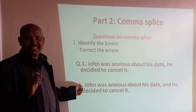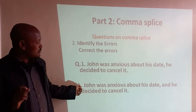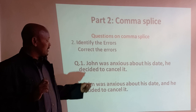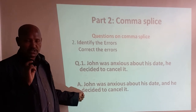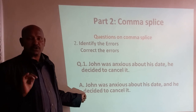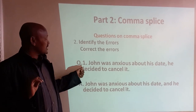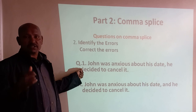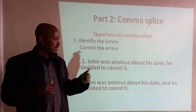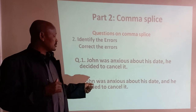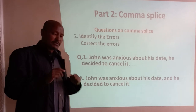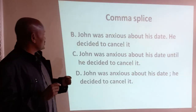The first way to correct this sentence is to insert a coordinating conjunction and place a comma before it. So the corrected sentence reads: 'John was anxious about his death, and he decided to cancel it.' This is an absolutely correct sentence and represents one way of correcting comma splice.